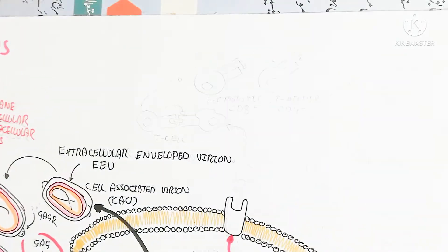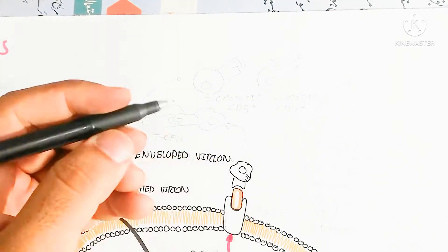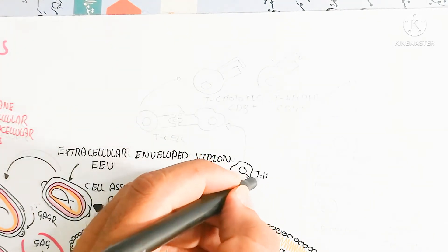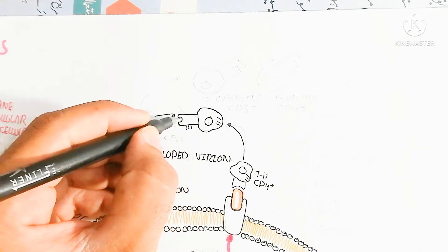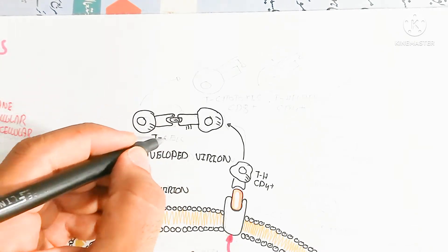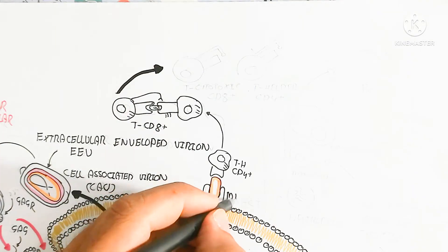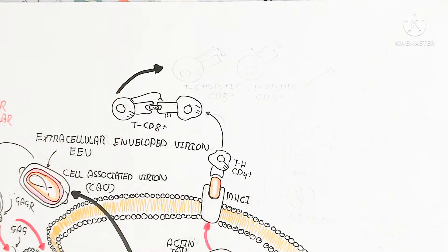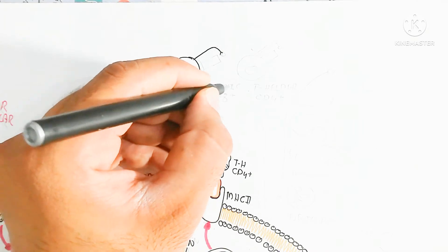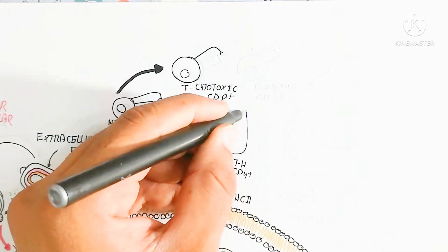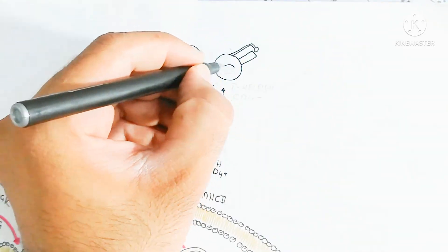After exocytosis, the cell-associated virion becomes the extracellular enveloped virion (EEV), which is formed extracellularly and is used for further infection, so the cycle continues. The immune response involves MHC class II molecules binding with T helper CD4 cells, which activate naive CD8 T cells to produce cytotoxic T cells.